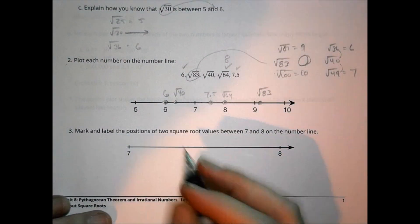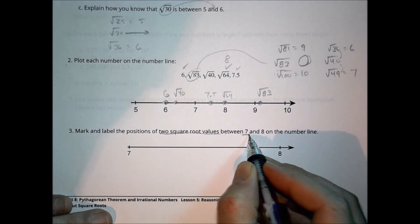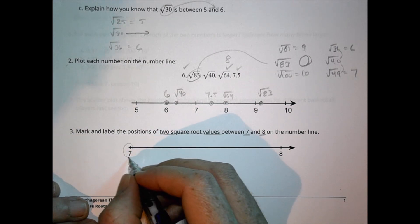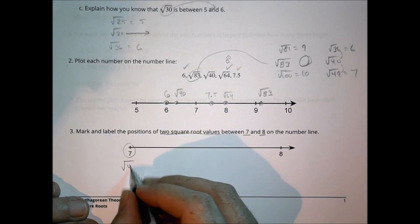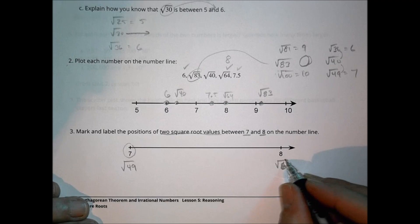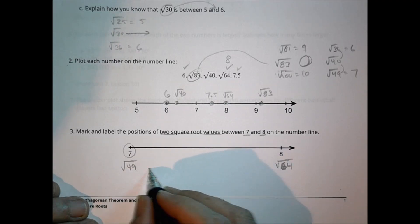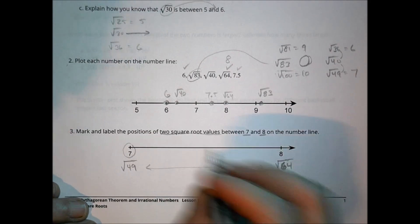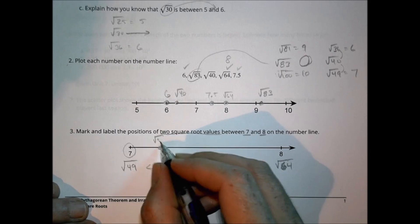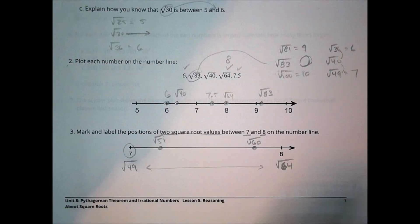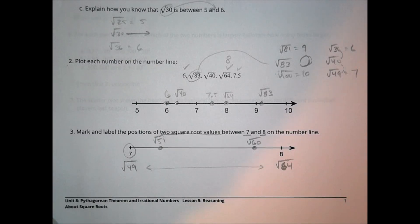Number 3: mark and label the positions of two square root values between 7 and 8 on the number line. Since 7 is the square root of 49 and 8 is the square root of 64, I can use any square root value between 49 and 64 — for example, the square root of 51 or the square root of 60. As long as it's between 49 and 64, you'll be just fine.